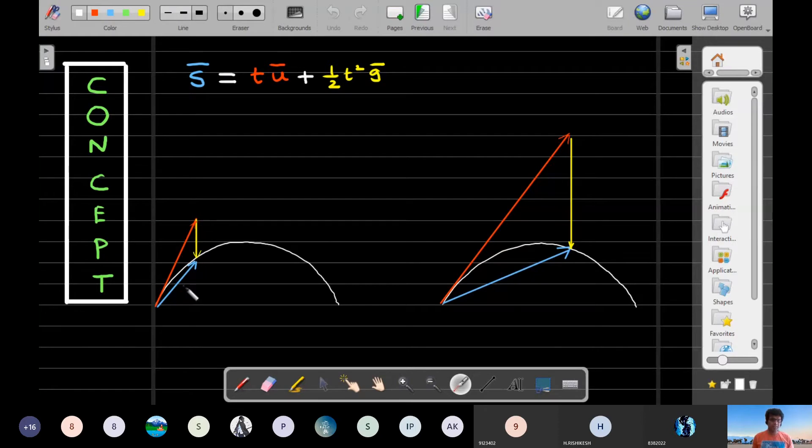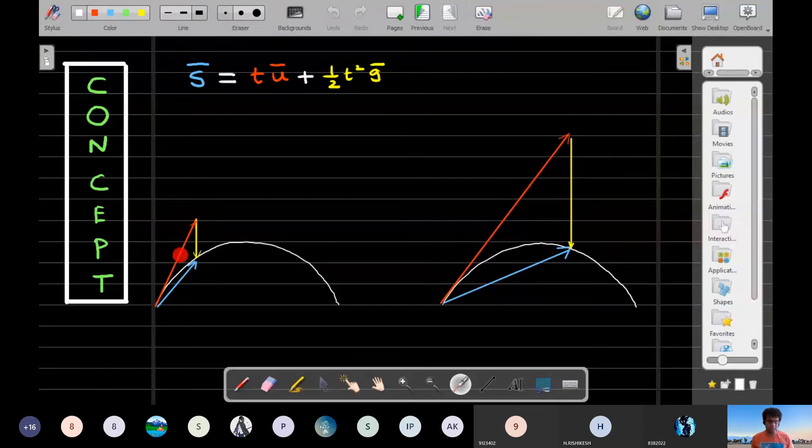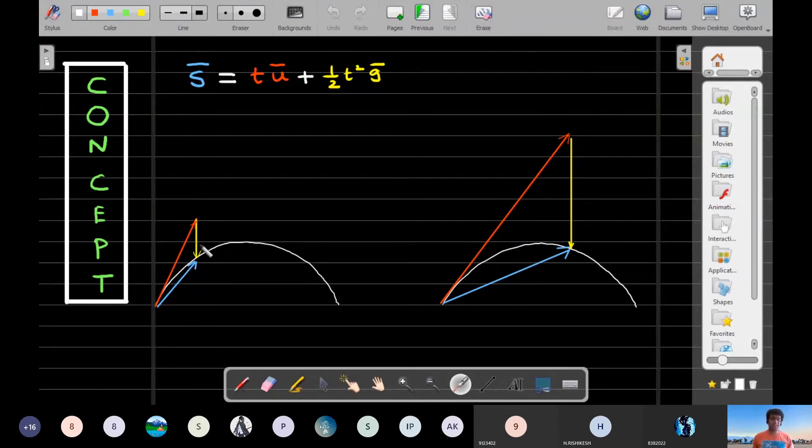You're looking at this blue color displacement vector as sum of two vectors which you are taking as the superposition. One, the red one, is where the velocity is there but gravity is not there. Whereas the second one, the yellow one, is velocity not there and only gravity existing. The sum of these two red and yellow vectors can be representing the blue vector.